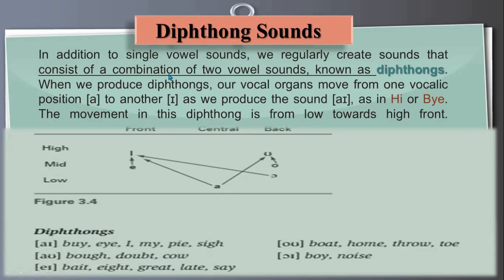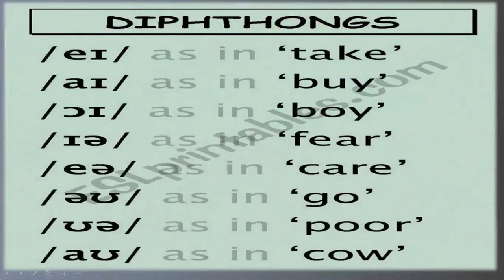In simple terms, diphthongs are the combination of two vowel sounds. There is a chart showing how these IPA symbols are used. There are eight diphthongs in English out of the 20 vowel sounds total.